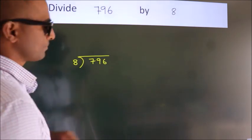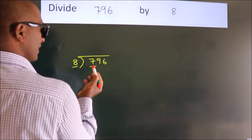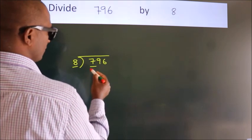Next, here we have 7, here 8. 7 is smaller than 8, so we should take two numbers.